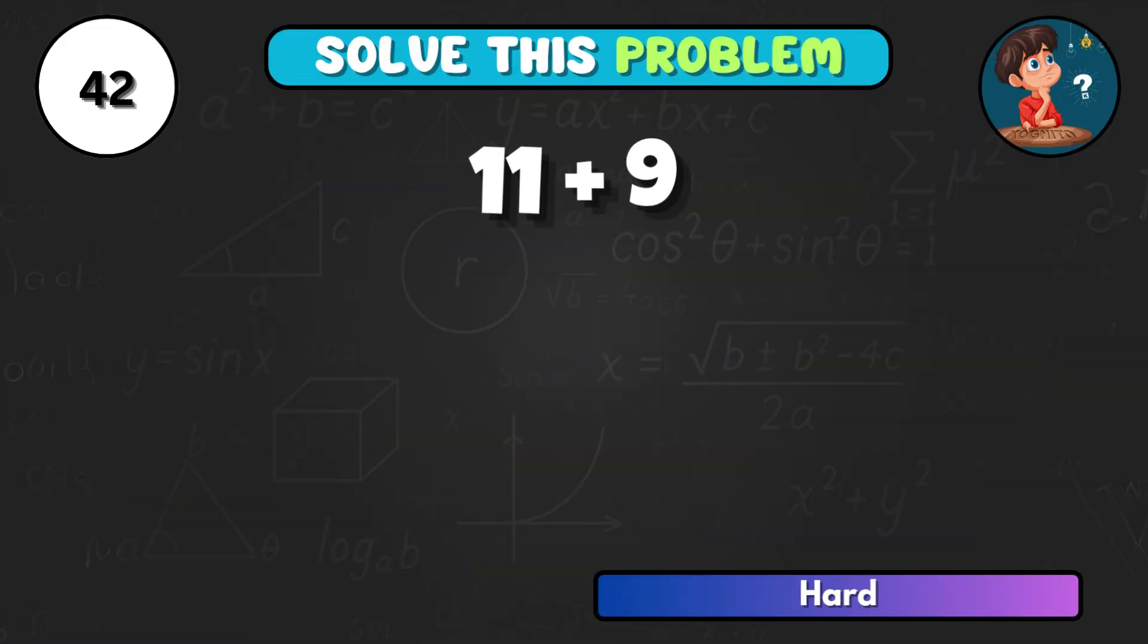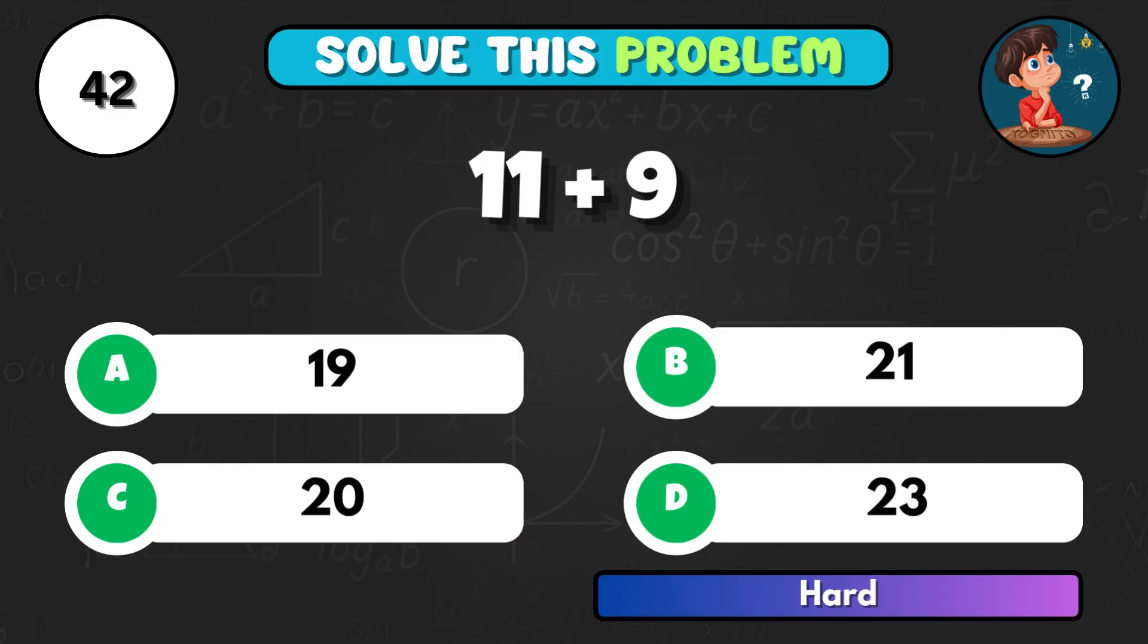11 and 9, what do they make? Correct letter C, equal to 20.